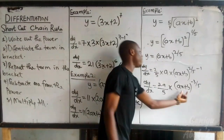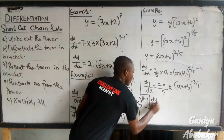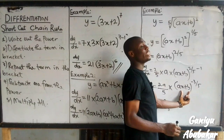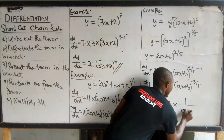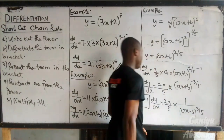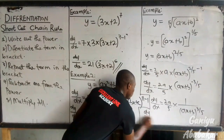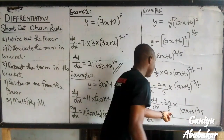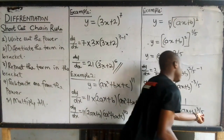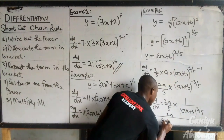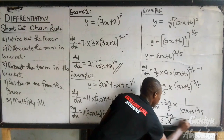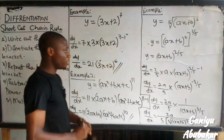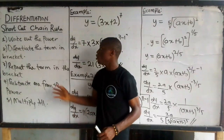Simplifying, dy/dx equals 2a over 5, multiplied by (ax + b) to the power minus 3 over 5. Taking this through indices, I'll have 1 over (ax + b) to the power 3 over 5, which is the fifth root of (ax + b) to the power 3. Multiplying through, dy/dx equals 2a divided by 5 times the fifth root of (ax + b)^3. Here is the answer after differentiating this term using chain rule shortcut.